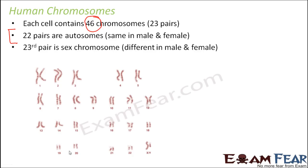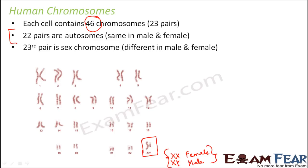But the last pair — that is the 23rd pair, which you see here — is going to be different in a male and a female. So if this is XX, then it is going to be a female. If this chromosome is XY, then it is going to be a male. So if the person is male, his sex chromosome is going to be XY, and if the person is a female, the sex chromosome is going to be XX. That is why this 23rd pair of chromosomes is called the sex chromosome, and this chromosome will define whether an individual is a male or a female.